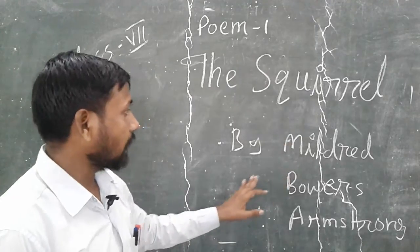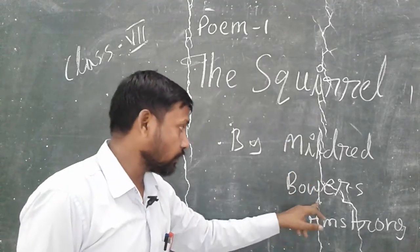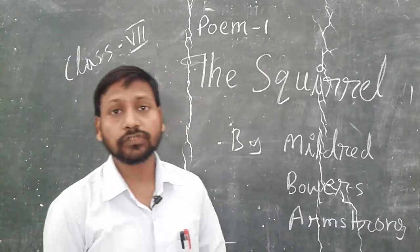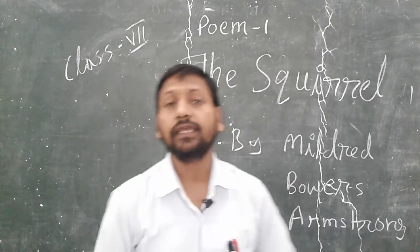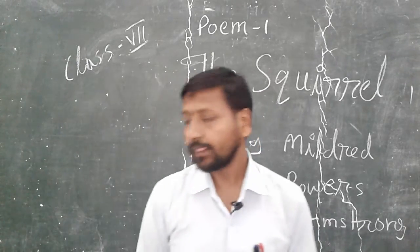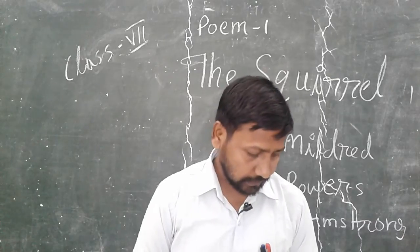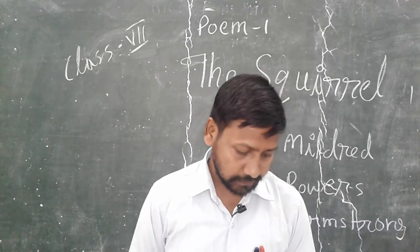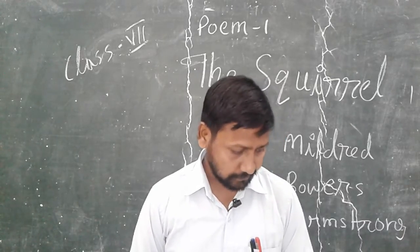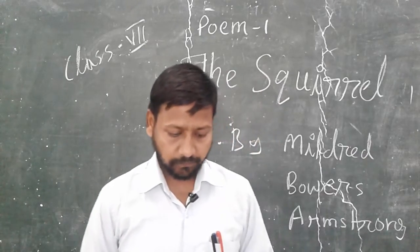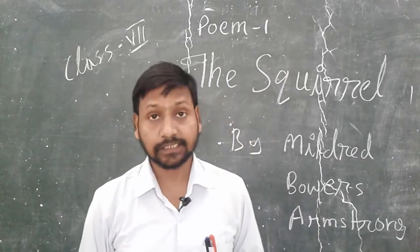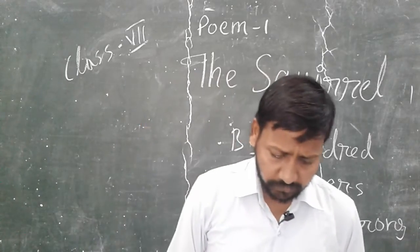This is class 7th poem first — The Square by Mildred Bors Armstrong, which is written by Mildred Bors Armstrong. And this is the first poem. You can open this page — page number 17, poem first, The Square. Let's start.